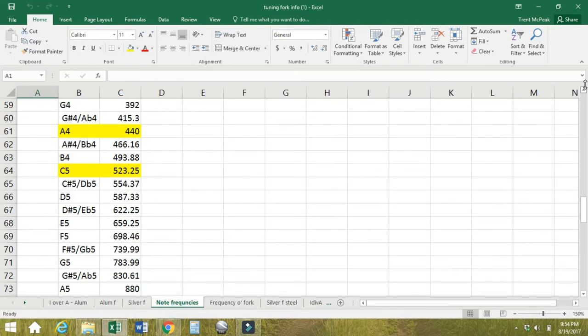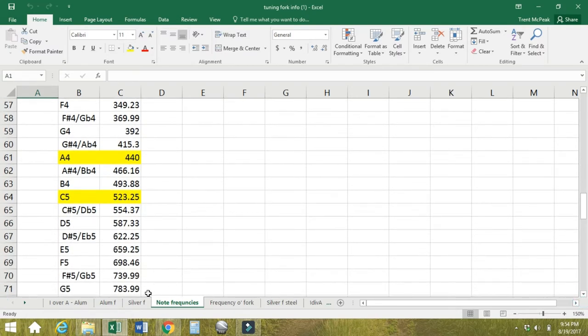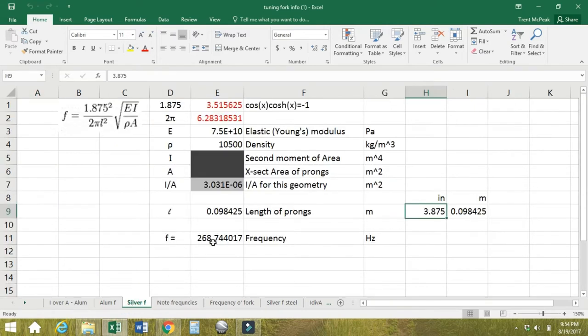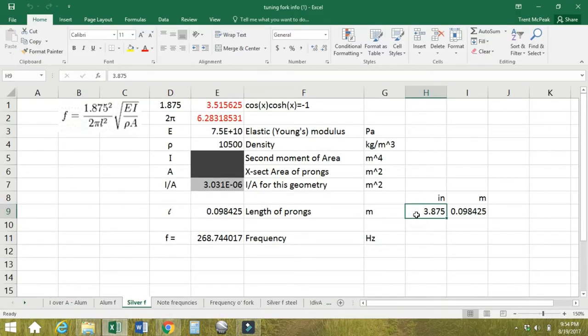269 would be somewhere between middle C and C sharp. But anyway, I thought it would be kind of neat to hit a certain frequency - the standard frequency A4, or A at 440 hertz, which is the general standard for musical pitch as adopted by the International Organization for Standardization ISO. So what we're gonna do is reduce the length to raise the frequency. Let's say we went to three inches - we're gonna be pretty close, 448 hertz.